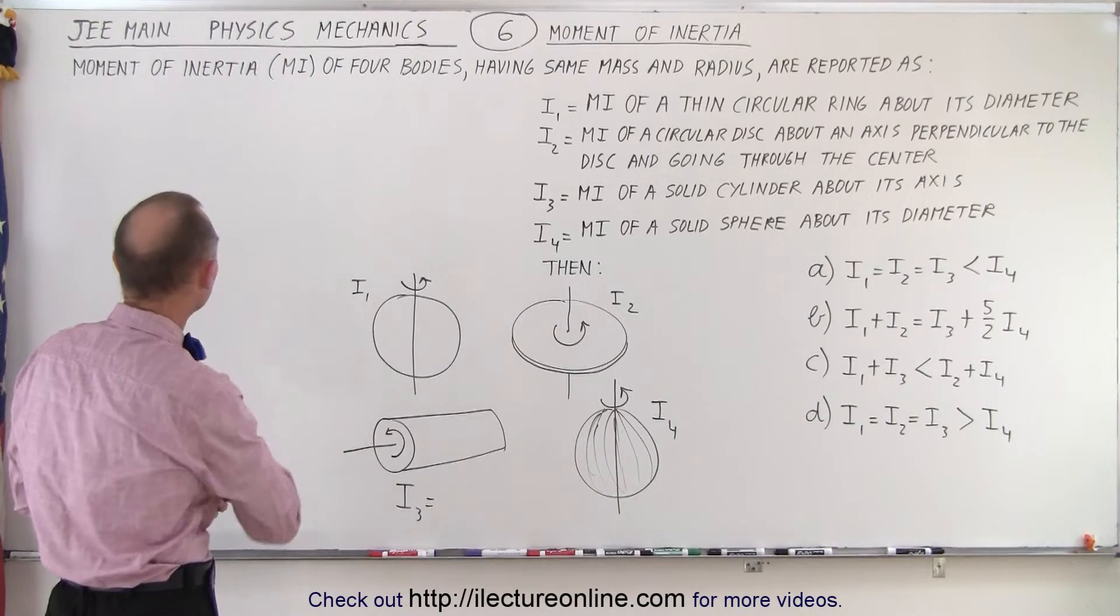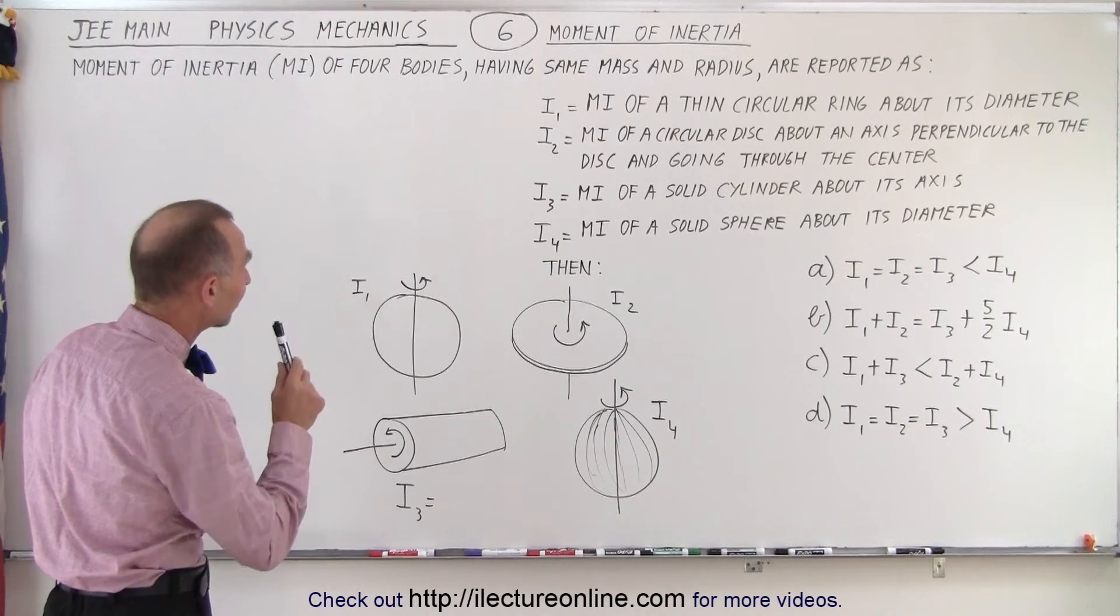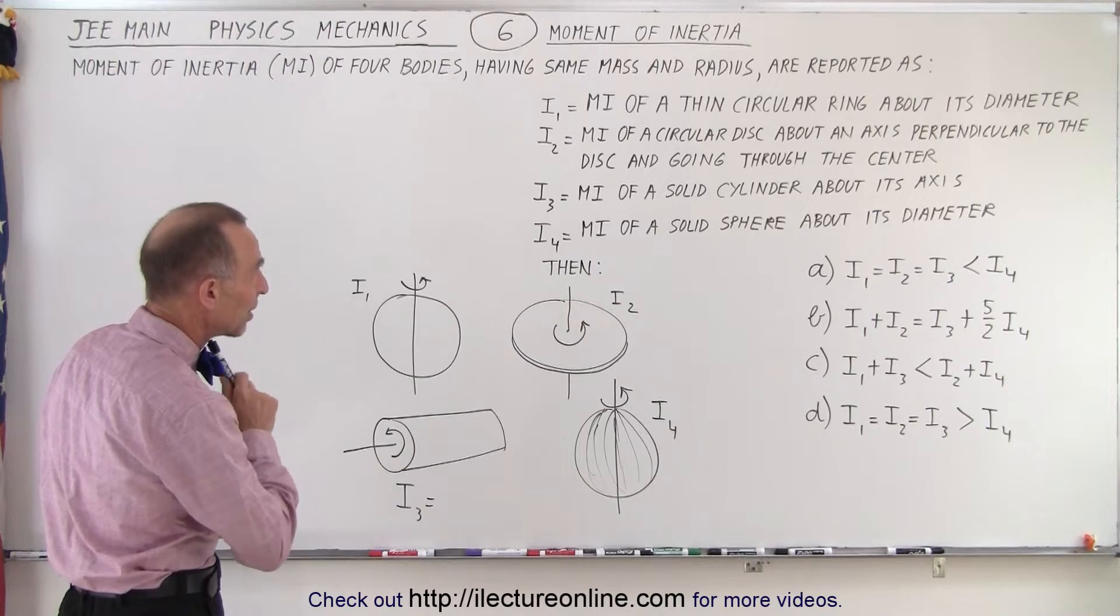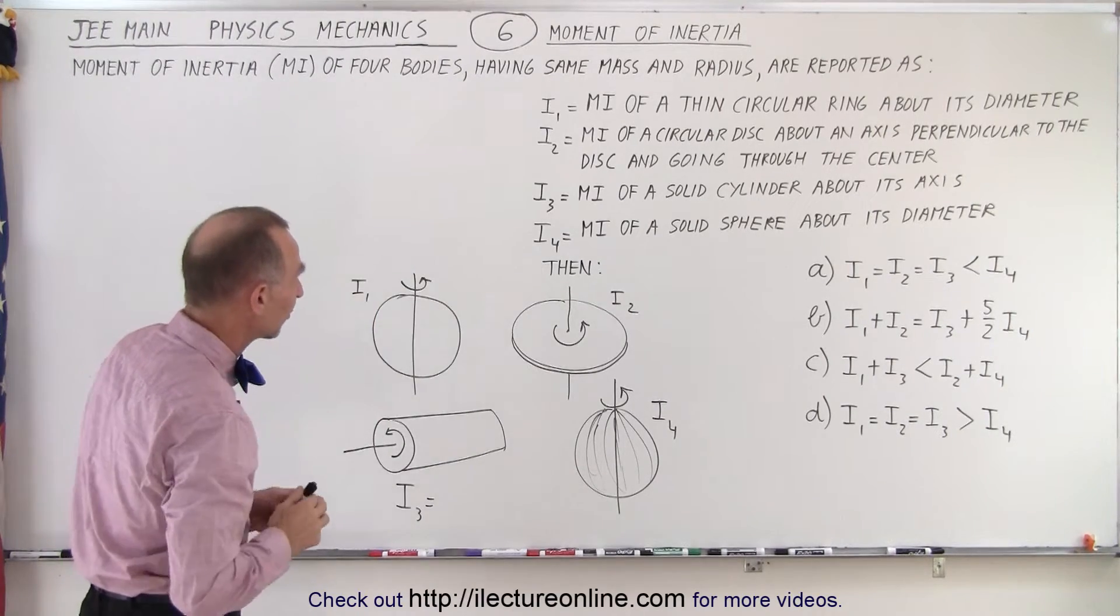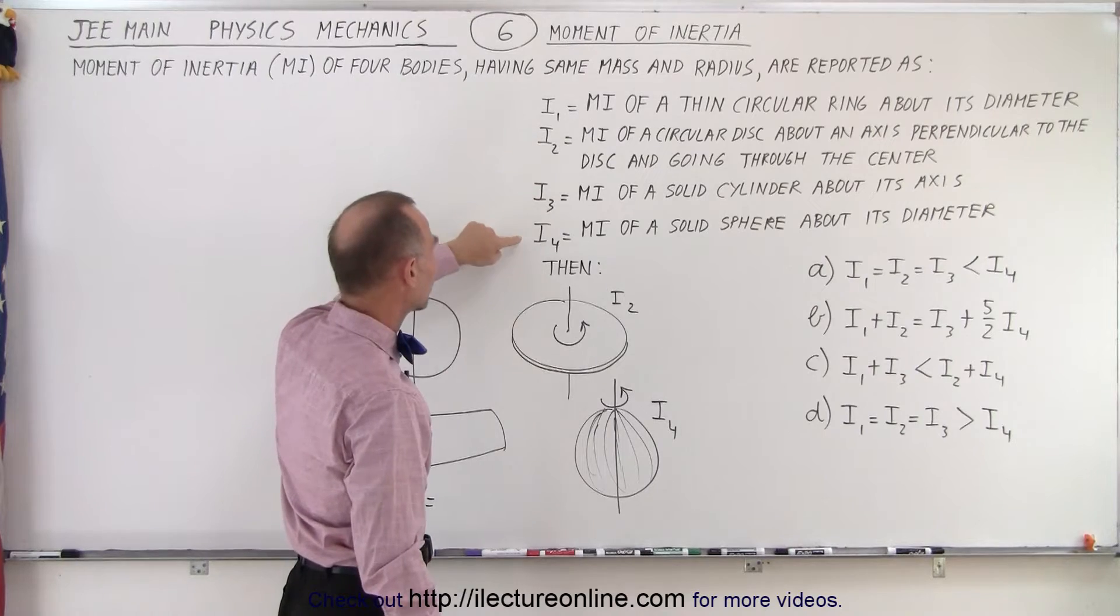The moment of inertia MI of four bodies having the same mass and the same radius are reported as, and here we have four statements I1, I2, I3 and I4.